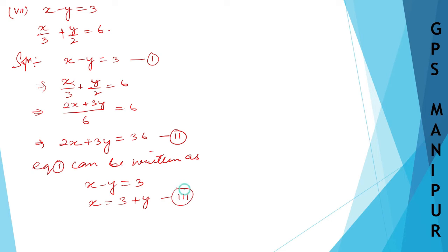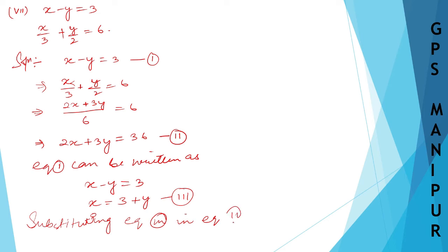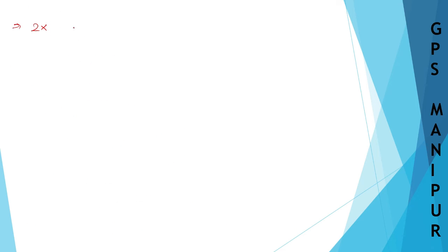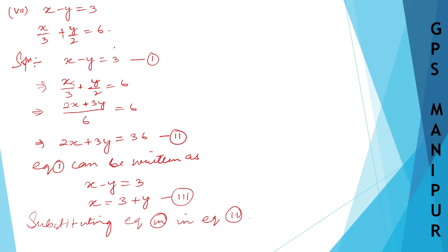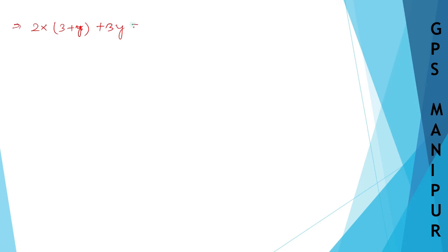Transfer y to the other side: x equals 3 plus y. This is equation number 3. Substituting equation number 3 into equation number 2, we get 2 into (3 plus y) plus 3y is equal to 36.